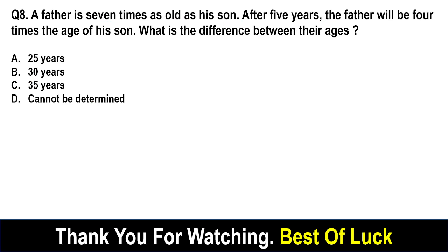A father is 7 times as old as his son. After 5 years, the father will be 4 times the age of his son. What is the difference between their ages? According to the question: F = 7S. After 5 years: F + 5 = 4(S + 5).